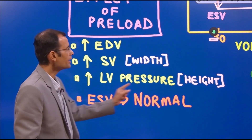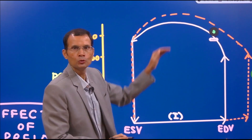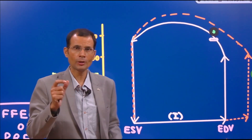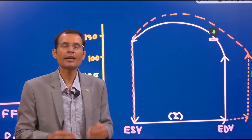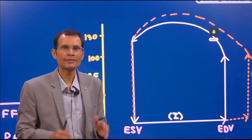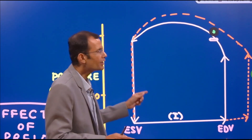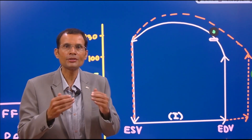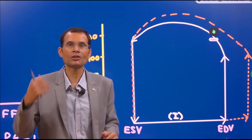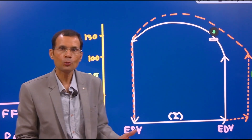The third point is increase in the left ventricular pressure. The height of the loop represents left ventricular pressure, since on the vertical axis there is left ventricular pressure. In this graph we are talking essentially about left ventricular pressure. You can see the height of the loop has increased, meaning left ventricular pressure also increases. With the next systole, the left ventricle is contracting stronger, generating greater pressure inside. So left ventricular pressure will also increase when preload is increased.